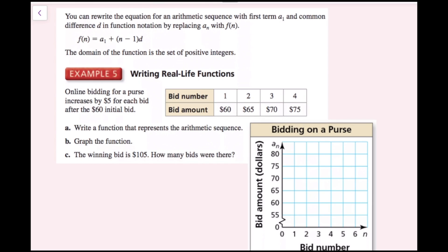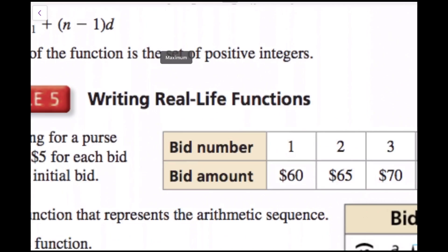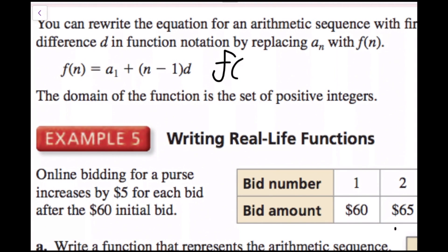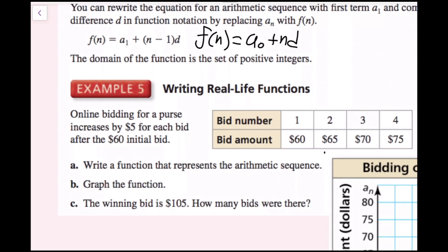You can rewrite the equation for an arithmetic sequence in function notation by replacing a sub n with f of n: f of n equals a sub 1 plus quantity n minus 1 times d, or f of n equals a sub 0 plus n times d. The domain of the function is the set of positive integers, because you can't have a zeroth term — you can only have a first term, second term, third term, and so on.